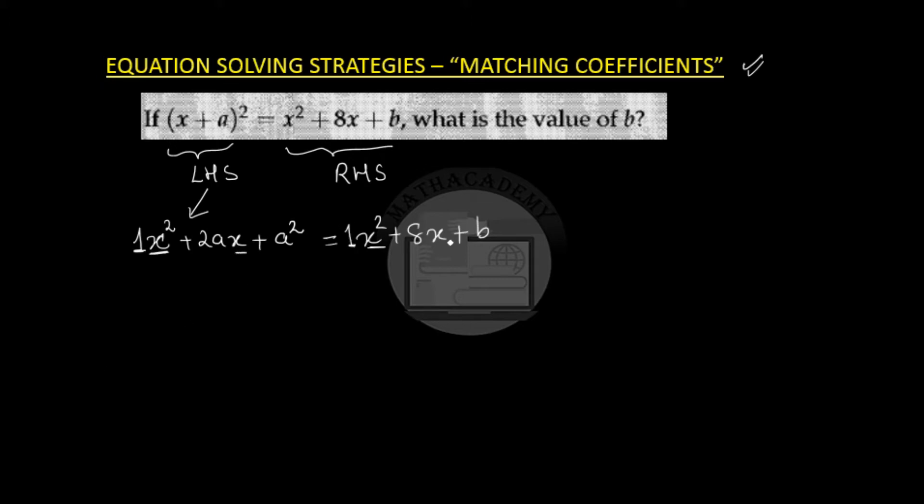The coefficient of x should also be same on both the sides. So this means that plus 2a should be plus 8. So 2a is 8 and a is 4, and the constant term here should be same as the constant term here.